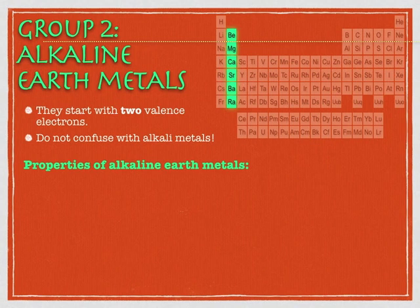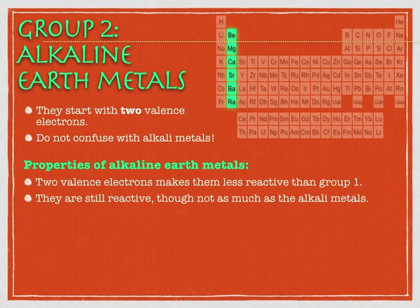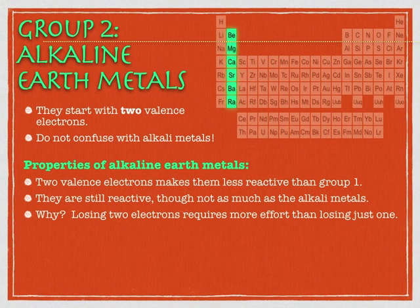All alkaline earth metals tend to be less reactive than group one, as we pointed out before, but they are still reactive — they do some neat stuff. These are probably the metals you are going to be able to get your hands on. It's a nice blend of reactivity but not craziness. Magnesium and calcium are not unheard of to work with in the laboratory. Losing two electrons takes a little bit more effort than one.